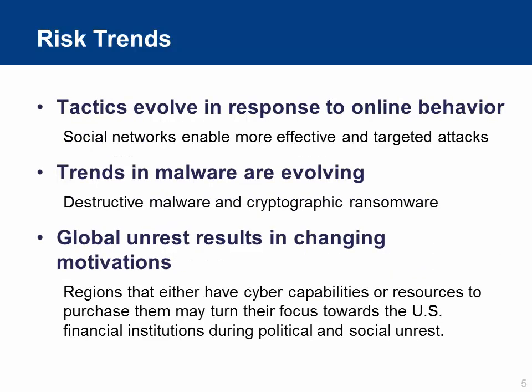We've also learned that the tactics cyber attackers are using evolve in response to online behavior. One of the most pervasive ways attackers begin their attacks is by gathering information via social networking sites. You, your colleagues, your friends, third parties, and family members all have information online that cyber attackers can use to target you and other employees. By using this information, they craft emails to specifically look like they come from someone you know or a group you're involved in, such as a charity or an alumni association — often the starting point for their attack.